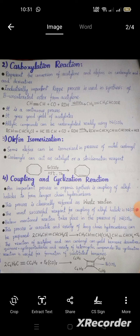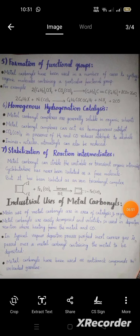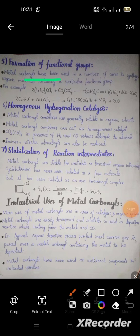In a cyclization example, 2 C₆H₅C≡CC₆H₅ reacts with iron carbonyl to give a cyclized product. Metal carbonyls have been used in synthesis of organic molecules containing particular functional groups. For example, dichlorodiphenylmethane reacts with dicobalt octacarbonyl, Co₂(CO)₈, to form the corresponding product.